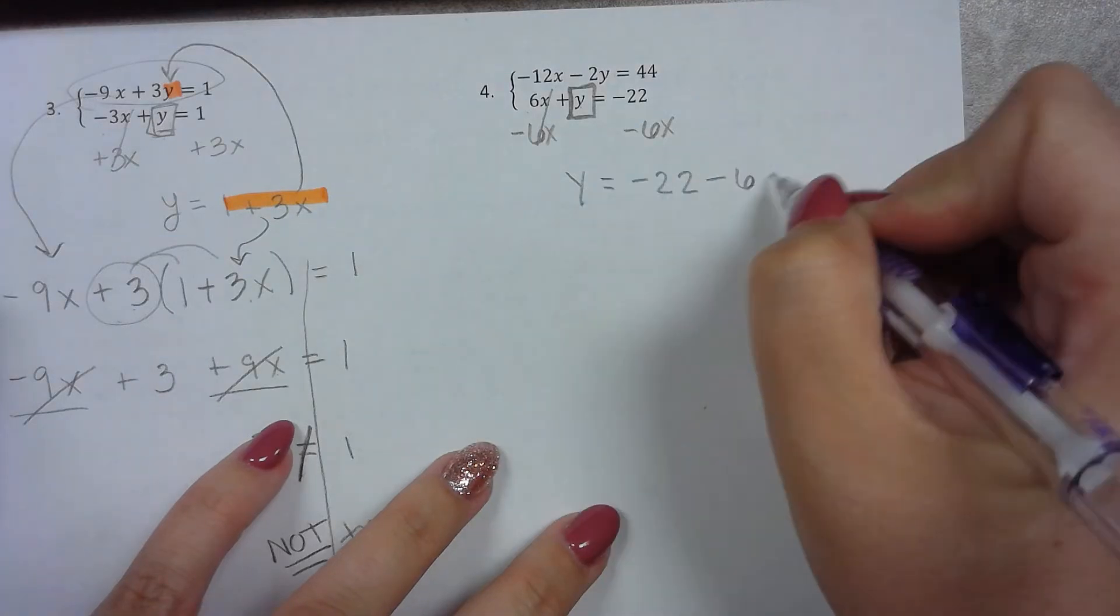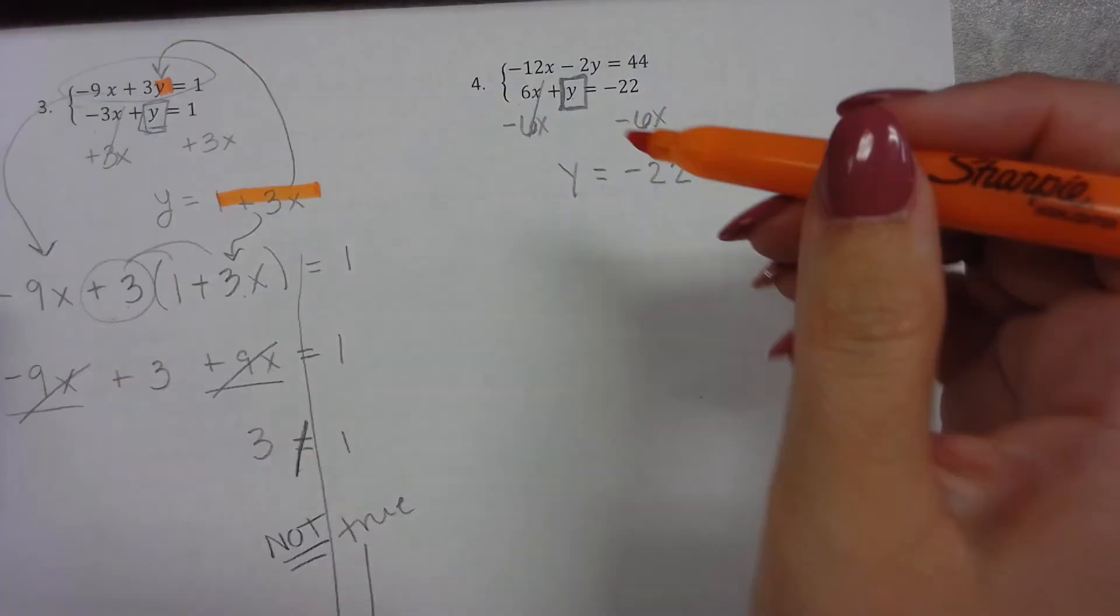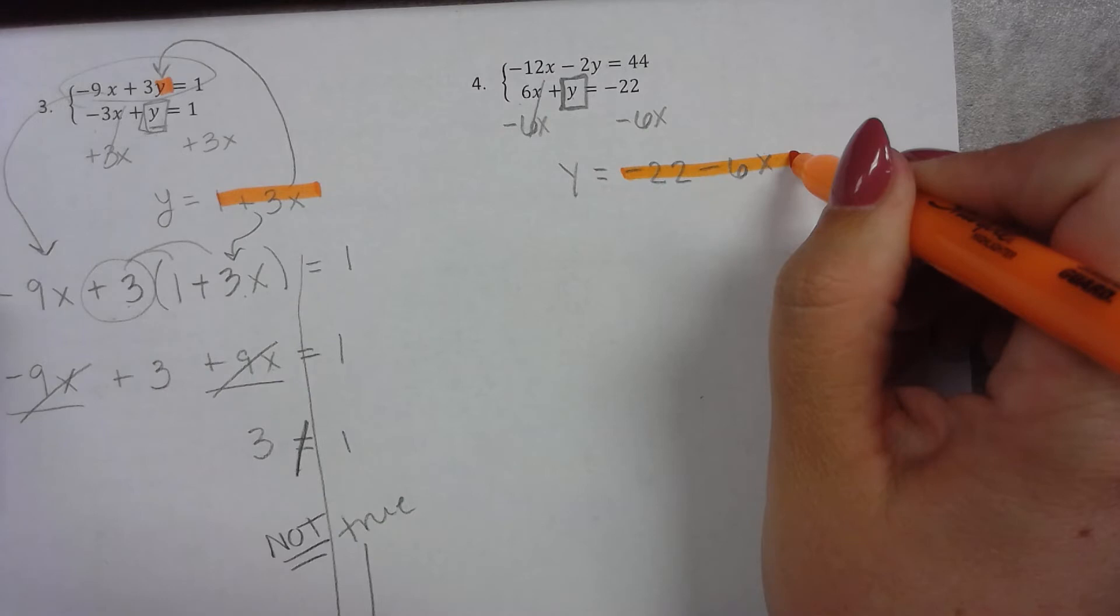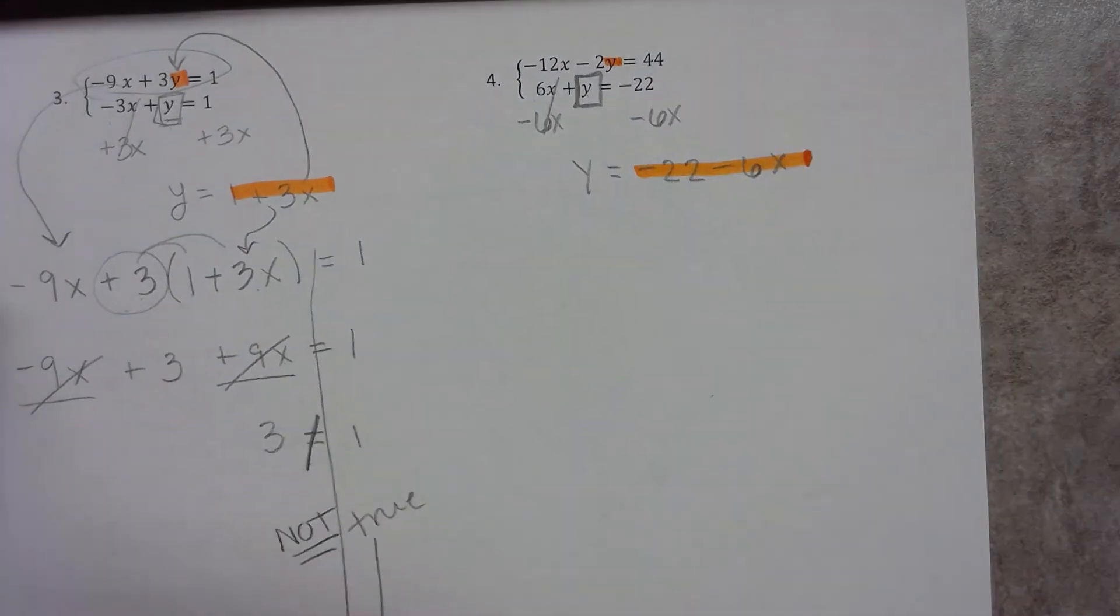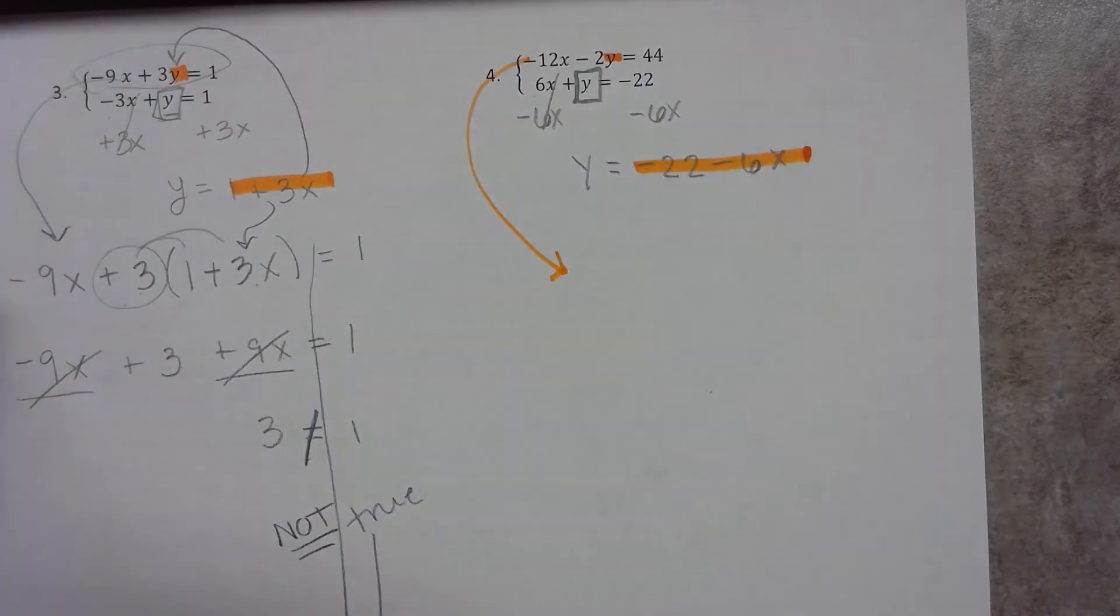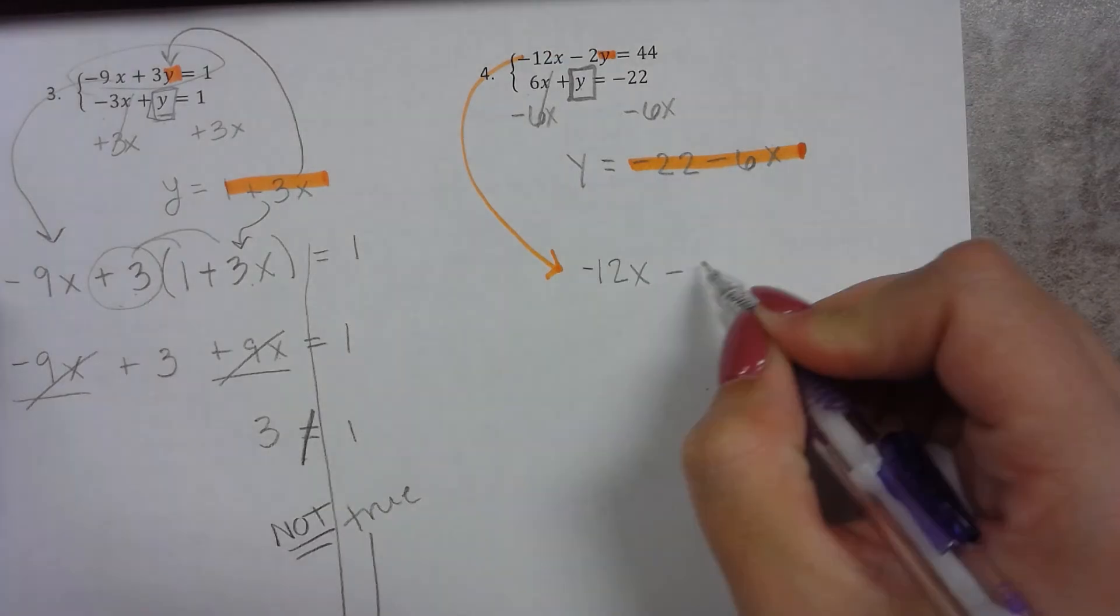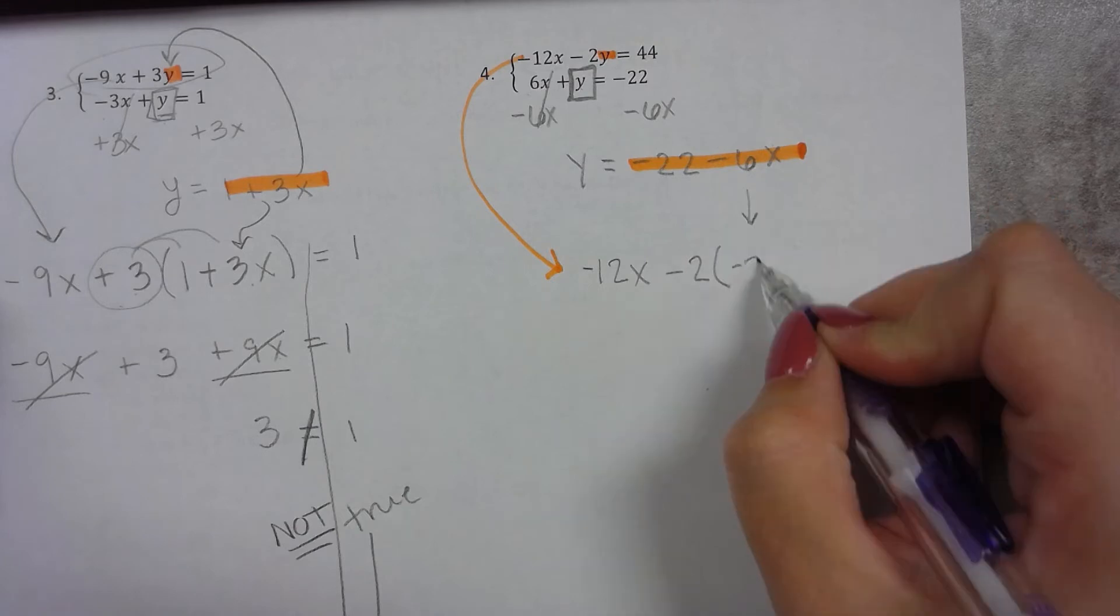I'm going to take this because this is equal to y, and I'm going to plug it in for y right here. So I'm going to take this equation, negative 12x minus 2, but instead of y, I'm going to write negative 22 minus 6x equals 44.